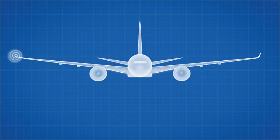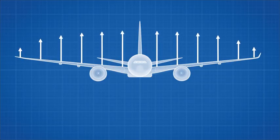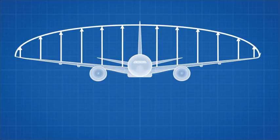Winglets reduce this airflow by reducing the pressure gradient at the tips of the wings, thus making the vortices much smaller. Their ultimate goal is to create a lift distribution across the wing in the shape of an ellipse. This minimizes the amount of air that wants to flow over the tips of the wing, while maintaining maximum lift.